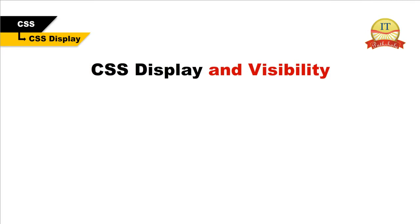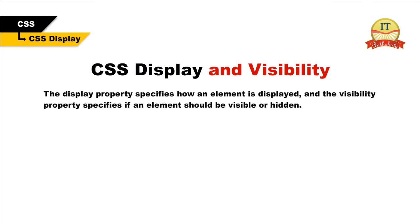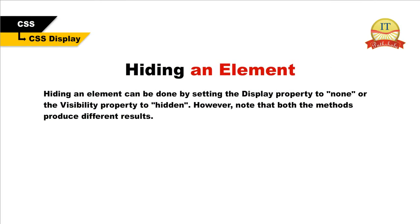CSS Display and Visibility. The display property specifies how an element is displayed, and the visibility property specifies if an element should be visible or hidden. Note that both methods produce different results.